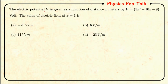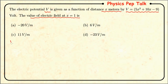Next question: the electric potential V is given as a function of distance x in meters by V = 5x² + 10x − 9 volts. The value of electric field at x = 1 meter is to be found. We know that electric field is defined as the negative potential gradient, that is E = −dV/dx.